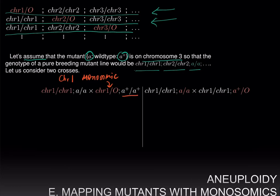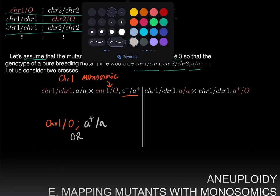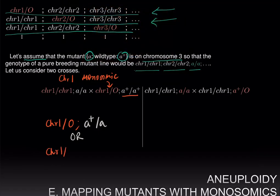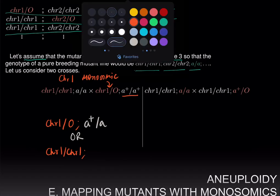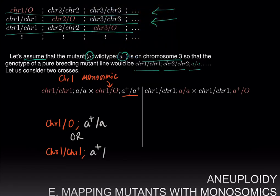This cross will produce two types of progeny. The first would be monosomic for chromosome 1 and heterozygous for a. The other type would be diploid for chromosome 1 and again heterozygous for a. As far as phenotypes go, they will all be wild type, assuming the mutant is recessive, which is usually the case.